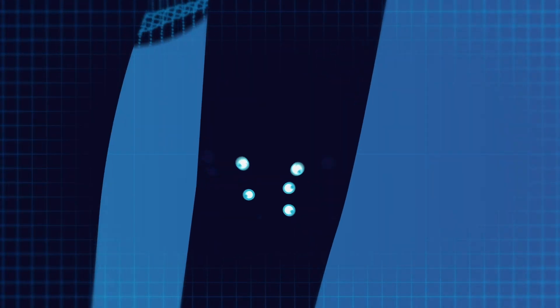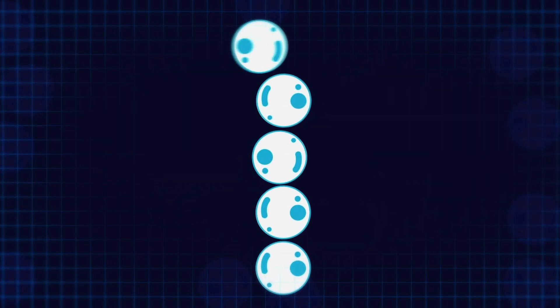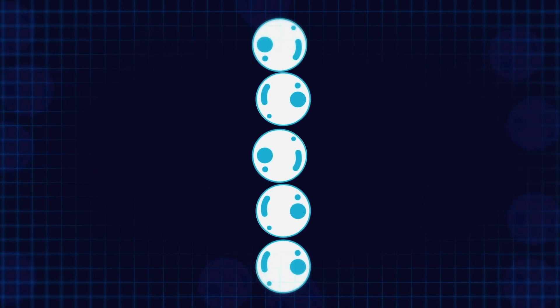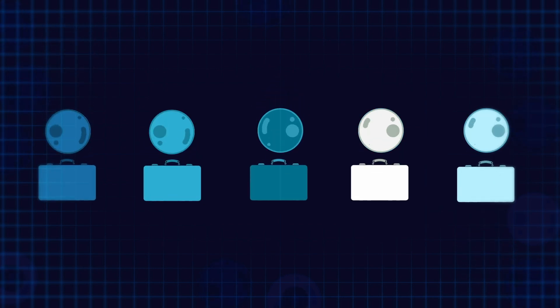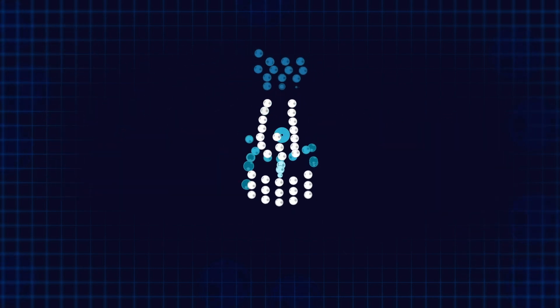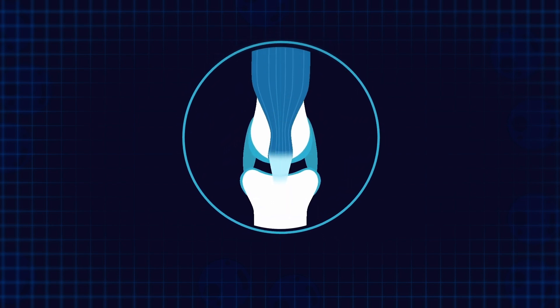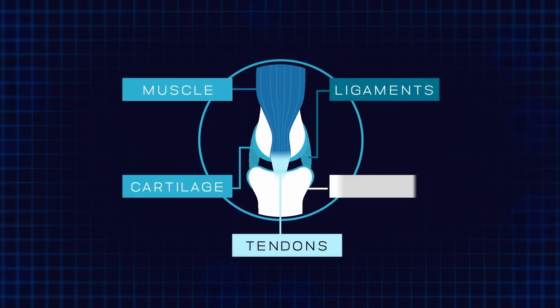Our bodies are composed of trillions of cells, the building blocks of all living things. Each cell in your body has a specific job to do, and multiple cells can combine to form body tissue such as muscle, cartilage, tendons, ligaments, or bone. This tissue then fulfills other specific tasks.